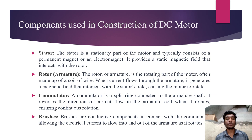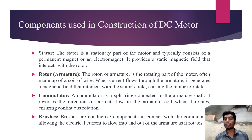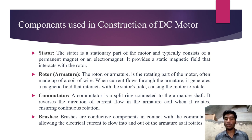The stator is the stationary part, consisting of a permanent magnet or electromagnet. It provides a static magnetic field that interacts with the rotor. The rotor, also called the armature, is the rotating part of the motor, often made up of coils of wire. When a current flows through the armature, it generates a magnetic field that interacts with the stator's field, causing the motor to rotate.